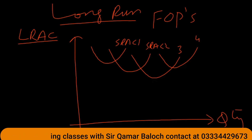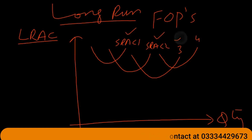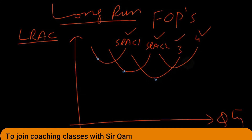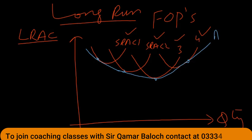In this graph, quantity is on the x-axis and long-run average cost is on the y-axis. We have short-run average cost curves SRAC1, SRAC2, SRAC3, and SRAC4. By finding the tangency points of these short-run curves and joining them, we get the long-run average cost curve — shown as a blue line — which is U-shaped and forms the envelope of the short-run average cost curves.